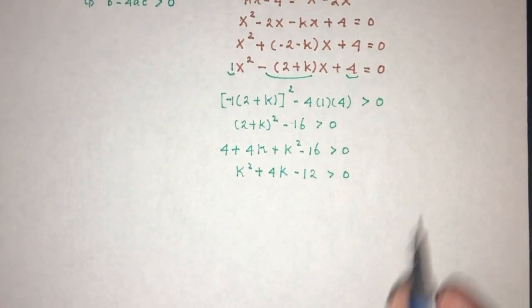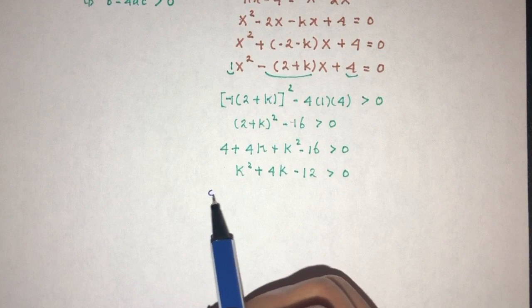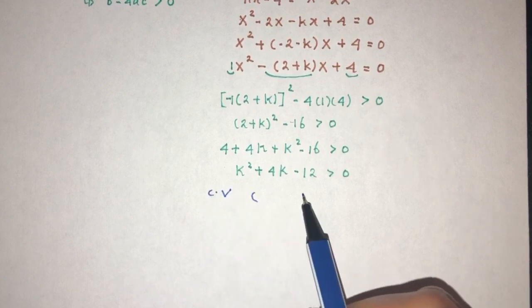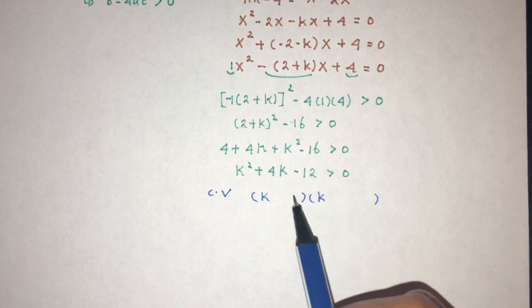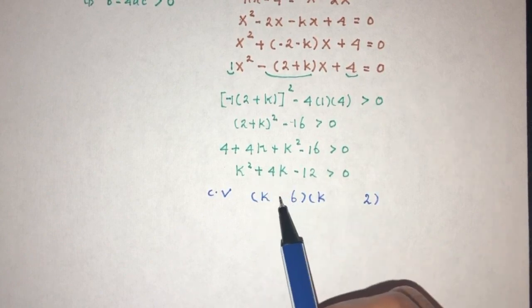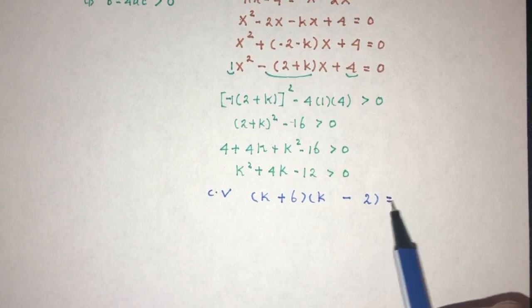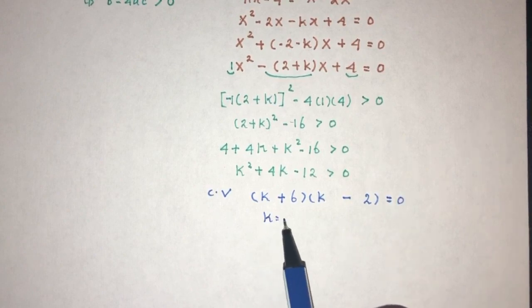Now obviously we have to first find the critical values of k. That will be factorization. k times k, 12 is 6 times 2. To get plus 4 we need to have plus 6 minus 2. k has to be minus 6 and k has to be the value of 2.